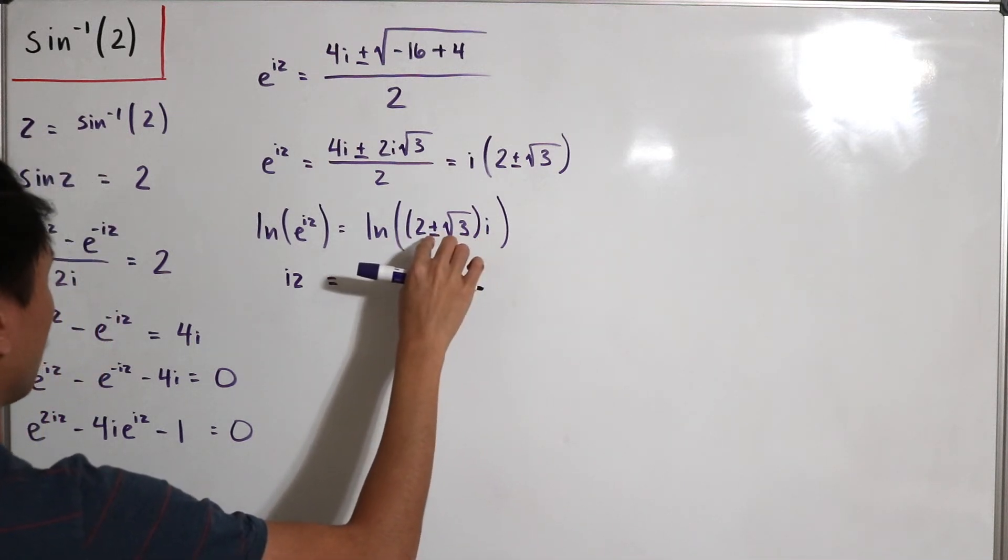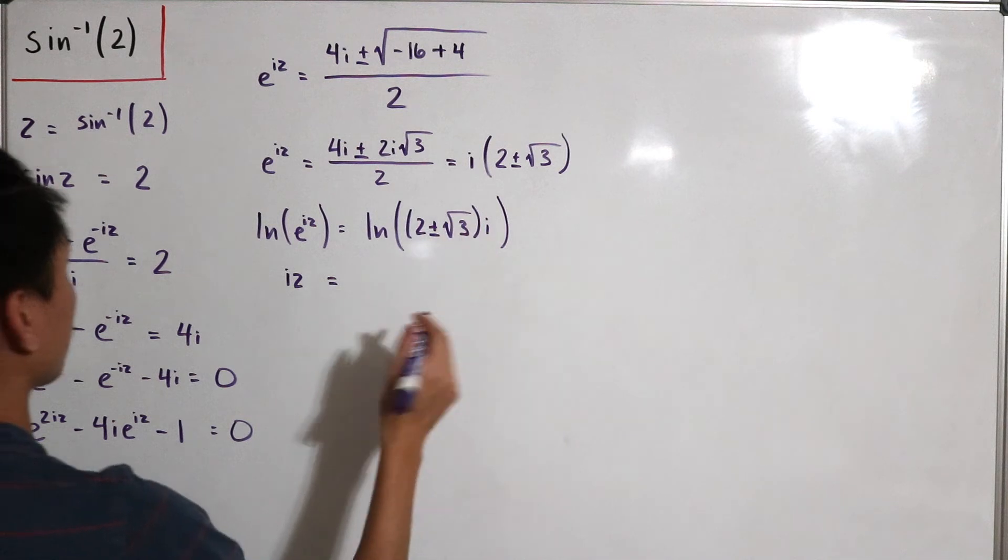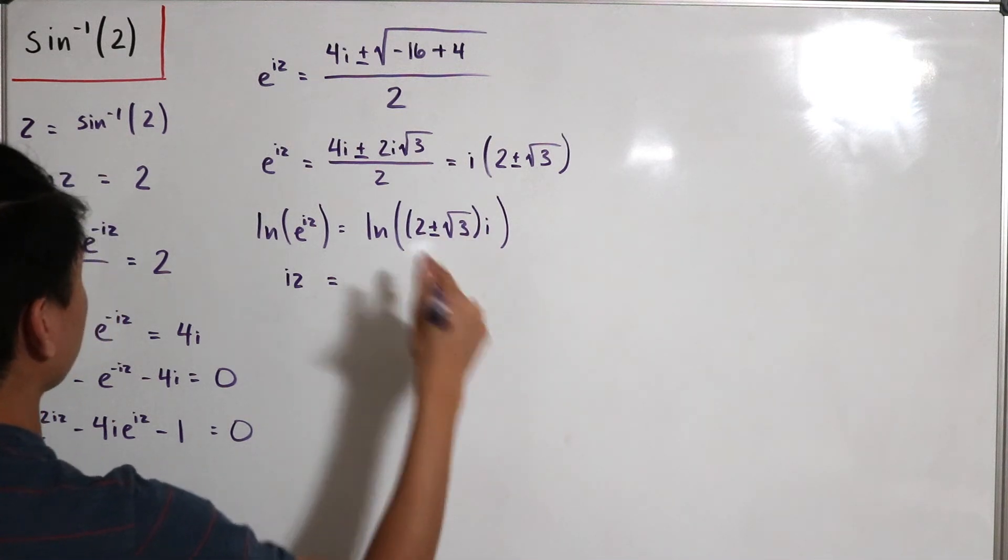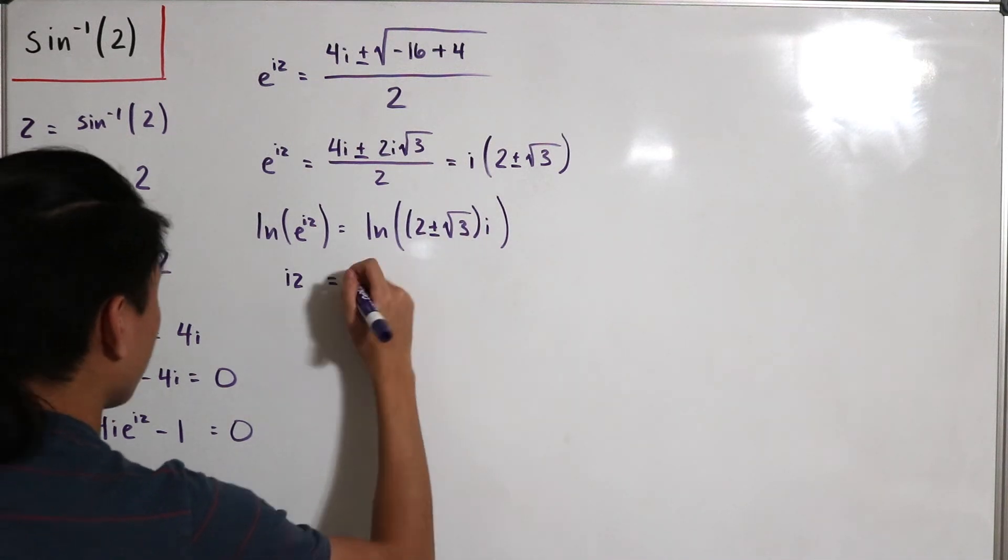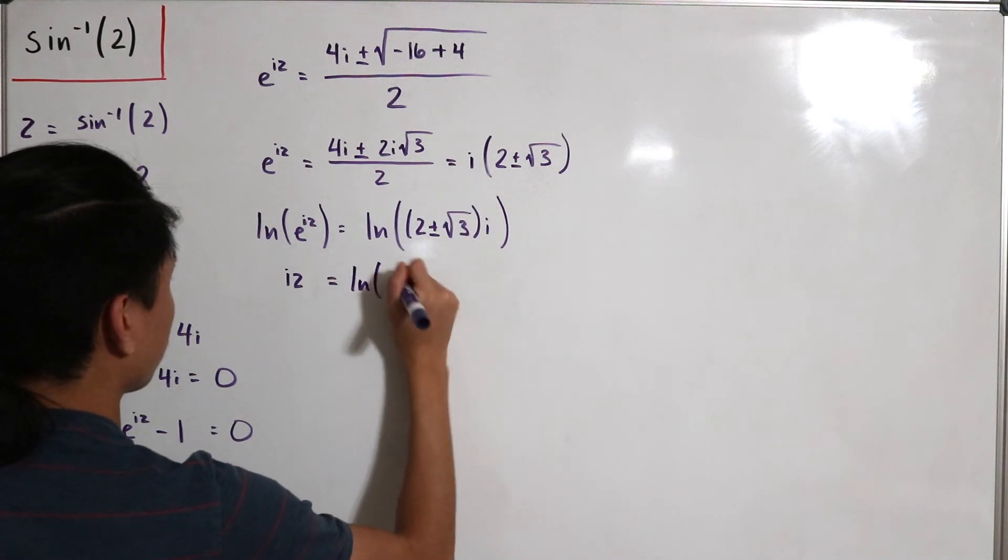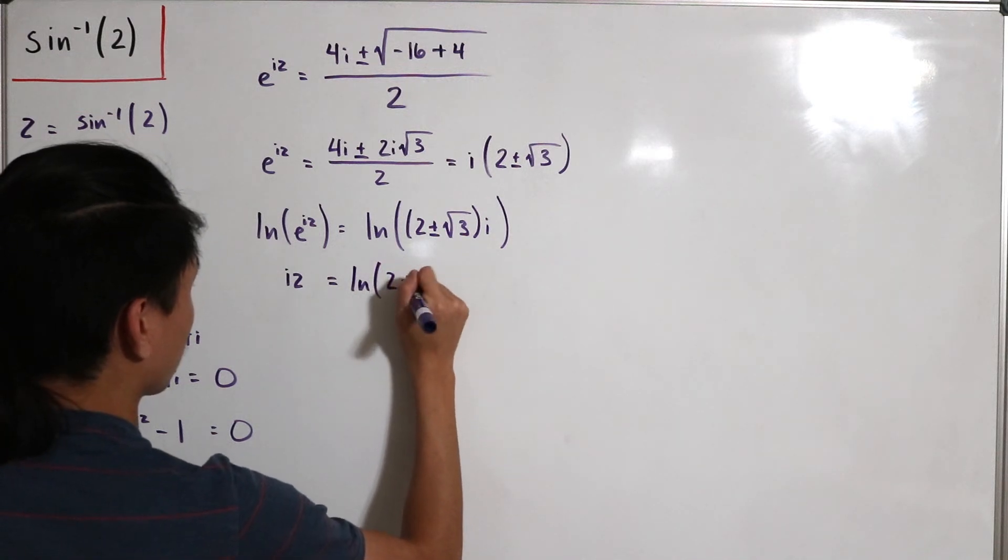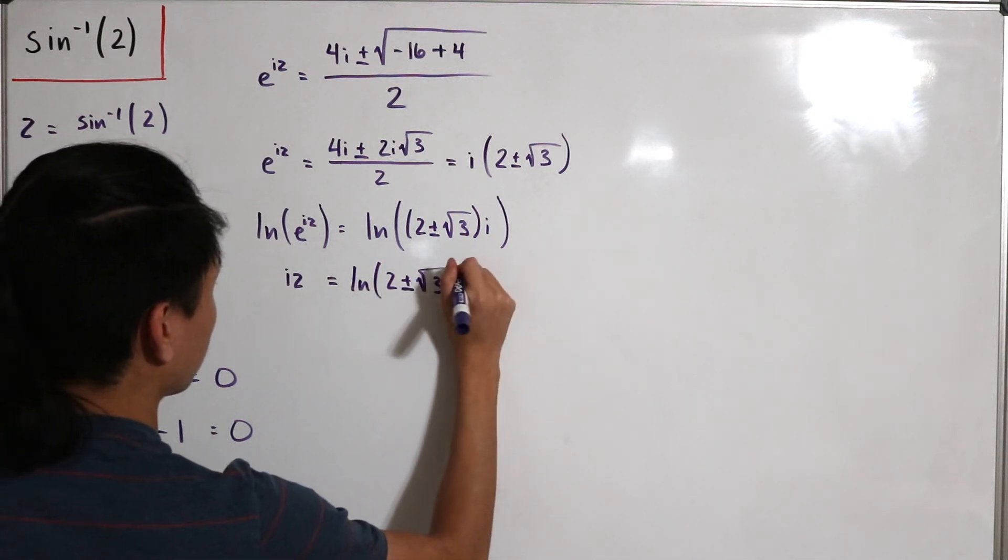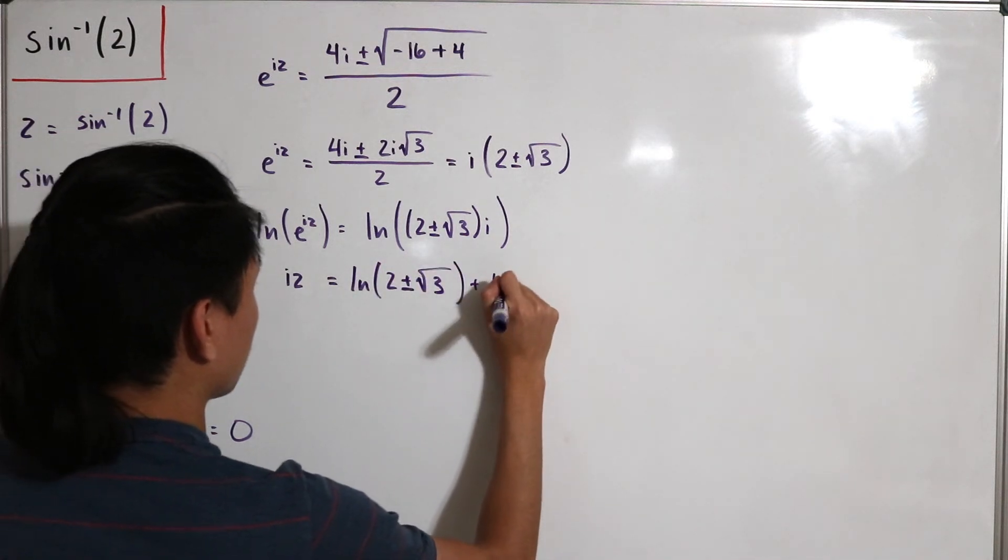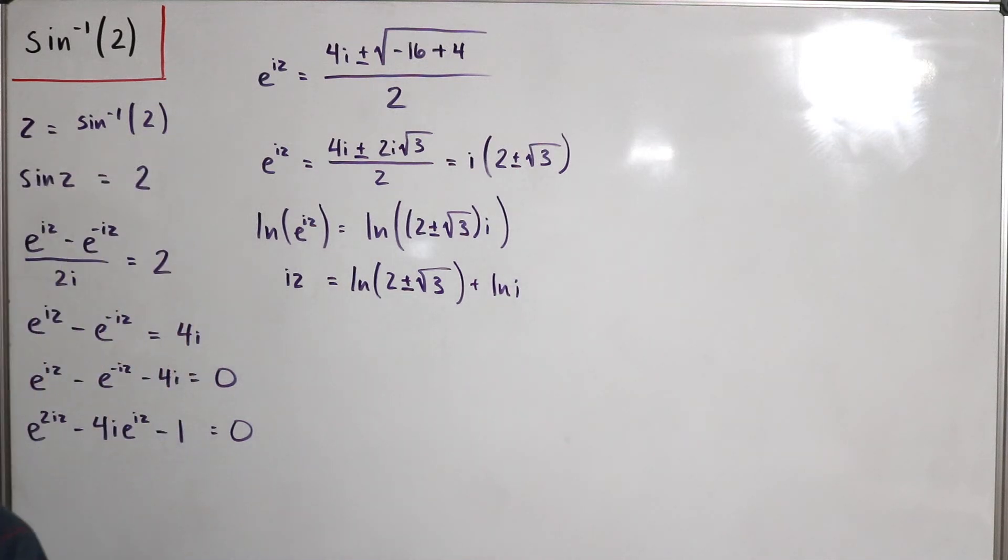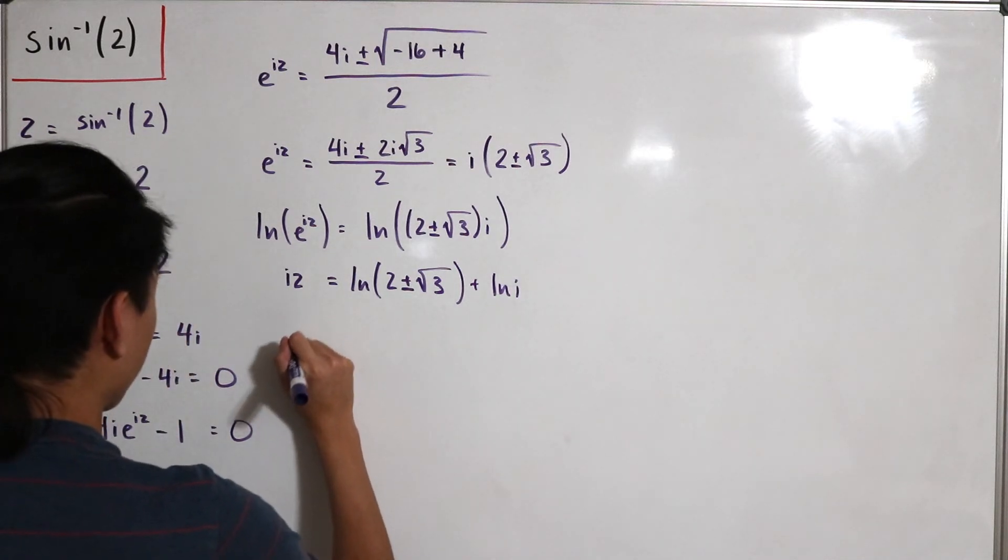So this would just be the natural log of 2 plus or minus the square root of 3, then plus the natural log of i. And now we actually know a little property that e to the i times pi over 2